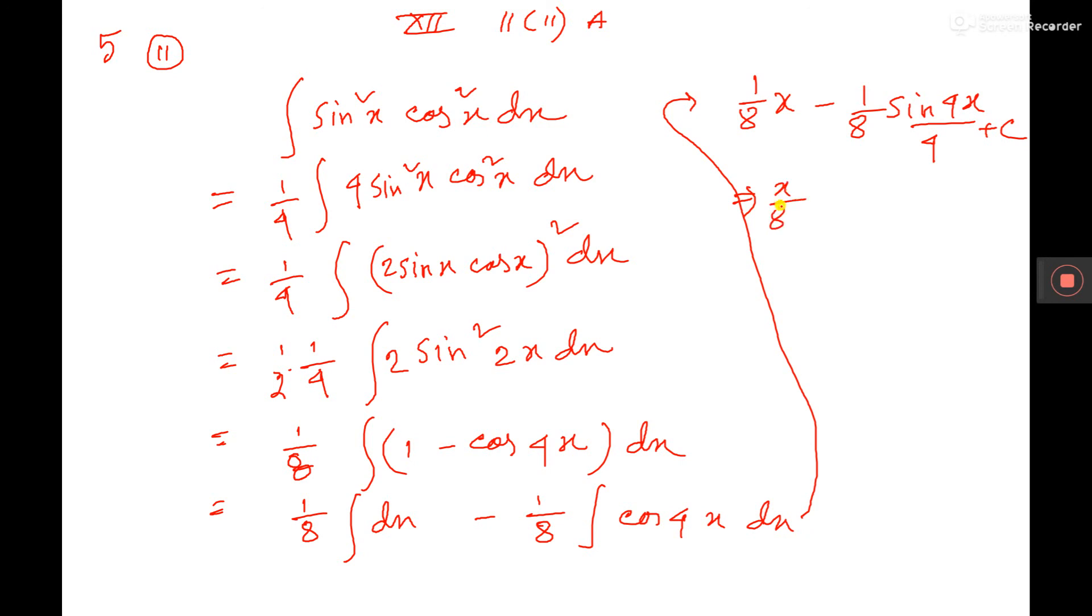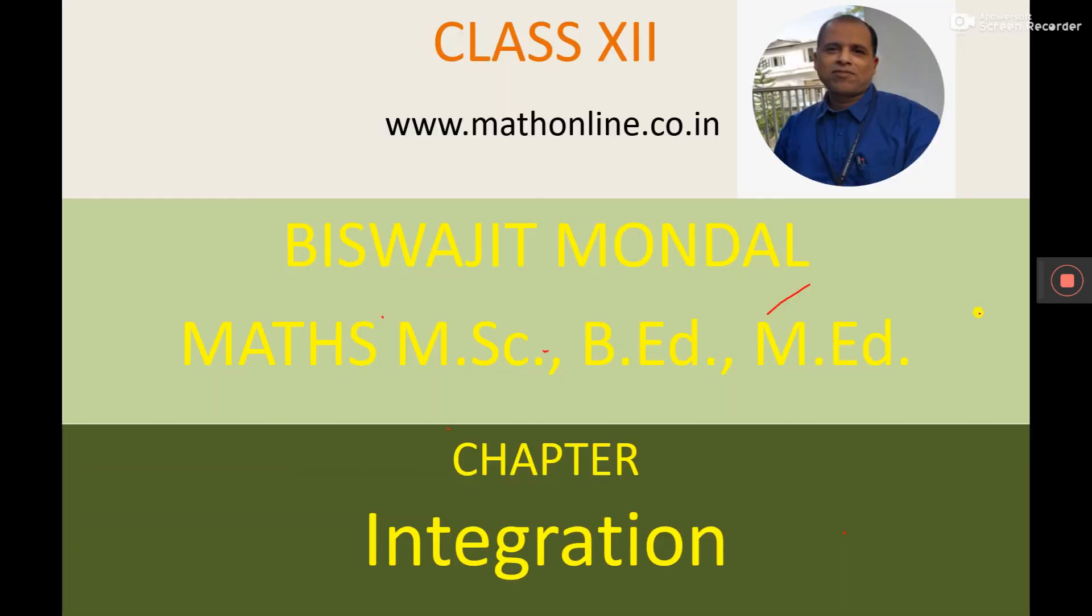So here it is x/8 minus 1/32 sin 4x plus c, where c is the integrating constant. You have to write, and this is the answer. Do you understand?